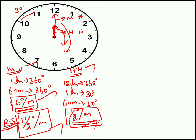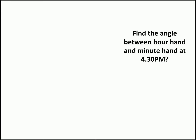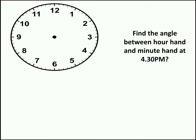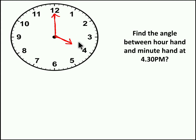Now based on this let us solve our first question. Find the angle between the hour hand and minute hand at 4:30 PM. We have to keep 4 PM as the base, because we can exactly find the angle between the two needles at 4 PM. At 4 PM, the minute needle will be pointing to 12 and the hour needle will be pointing to 4. We have 4 subdivisions between the two needles, each 30 degrees, so the angle is 120 degrees.